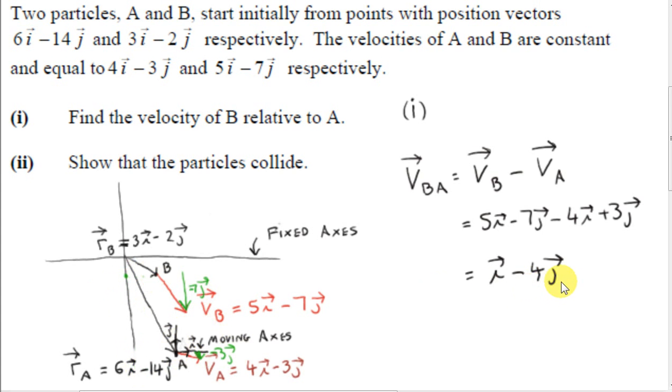So this relative velocity vector makes sense. In the next question, we are going to show that the particles collide. Now to do that, we need to consider the relative position vector. In particular, the position of B relative to A. So this vector has its tail at A and its head at B.